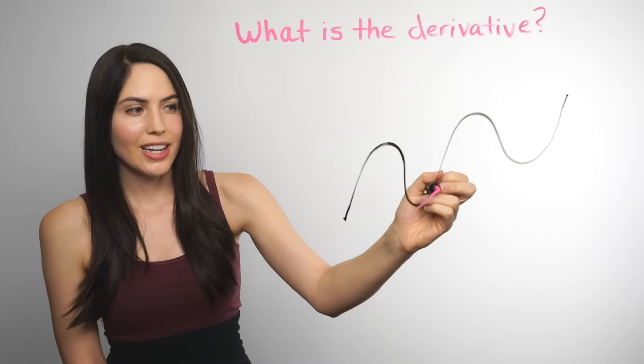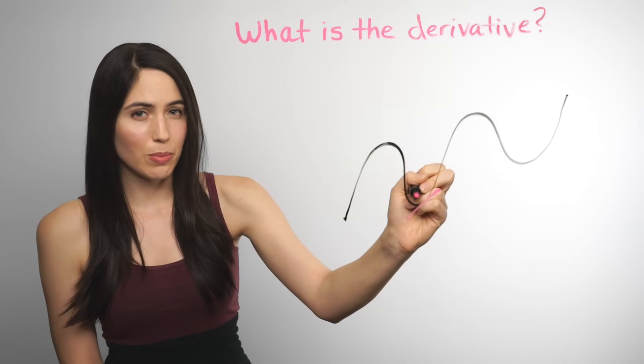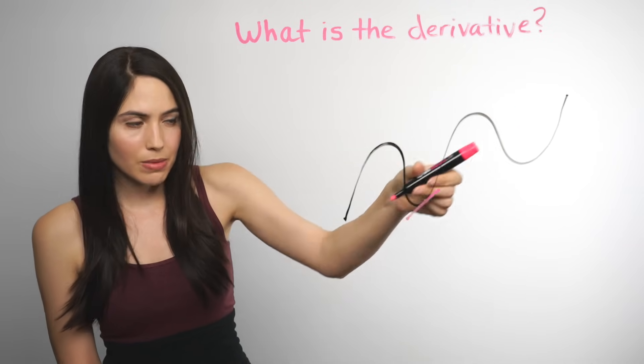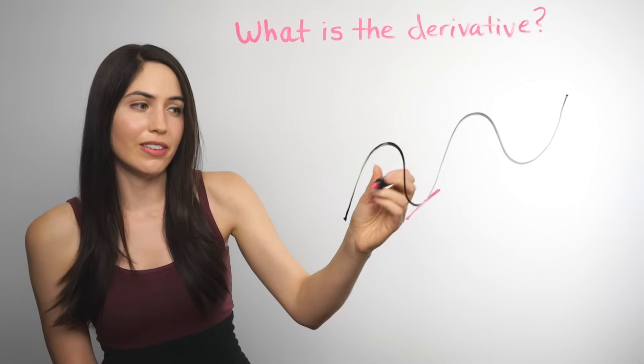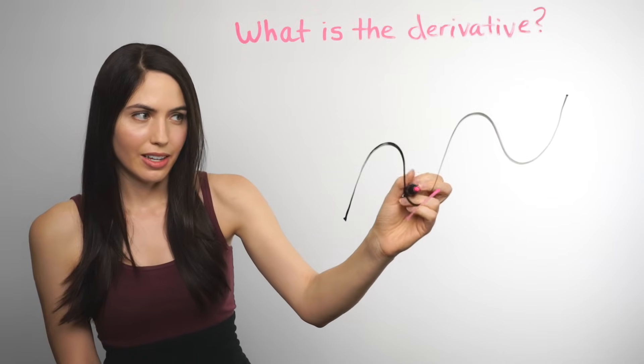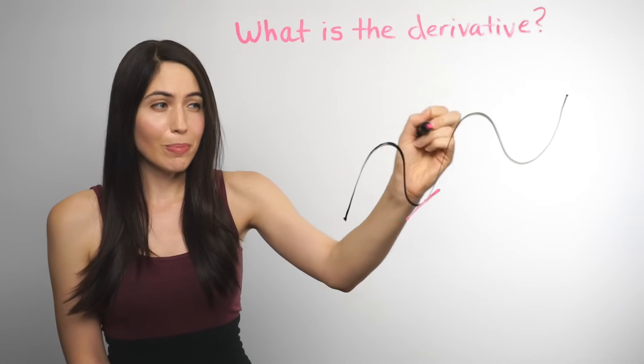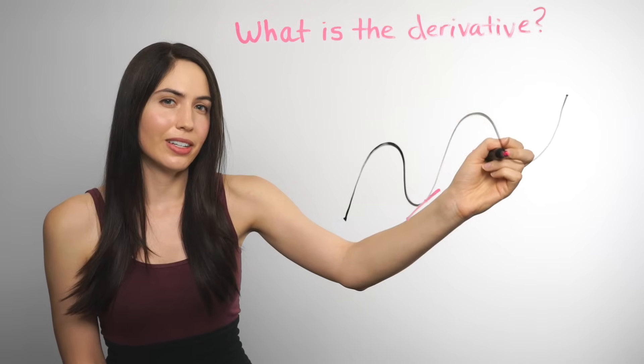So tangent line is a line that touches at only one point on the curve. It skims the surface, grazes the curve, and touches at only one point. And every point on your graph has a different little tangent line.